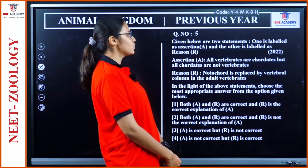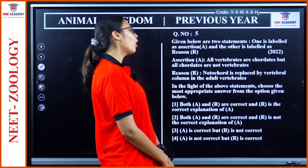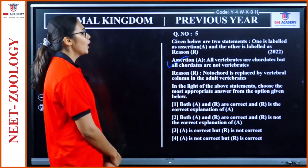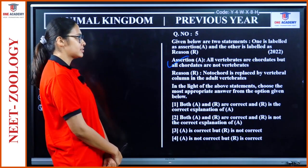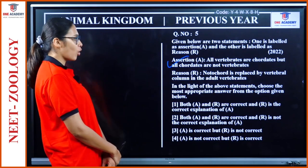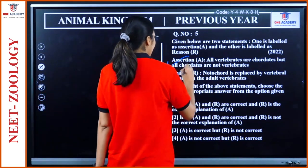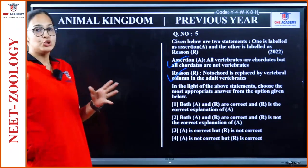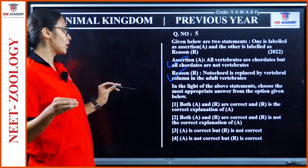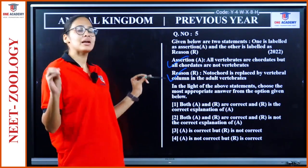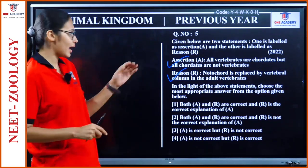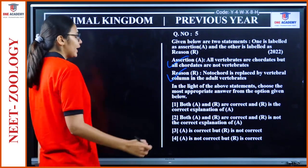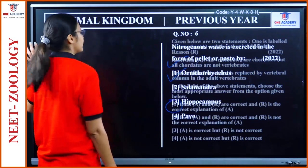Assertion-Reason question: Assertion — all vertebrates are chordates but all chordates are not vertebrates — correct. Reason — notochord is replaced by vertebral column in adult vertebrates — also correct. The reason properly explains the assertion because all vertebrates are chordates means they have a notochord in the embryonic stage. So both A and R are correct and R is the correct explanation of A.